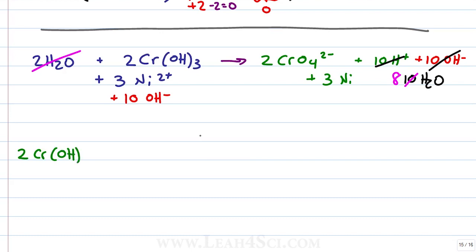2Cr(OH)3 + 3Ni2+ + 10OH- yields 2CrO4 2- + 3Ni + 8H2O.